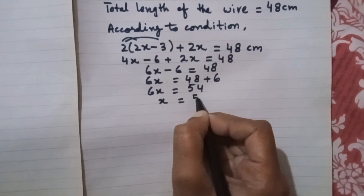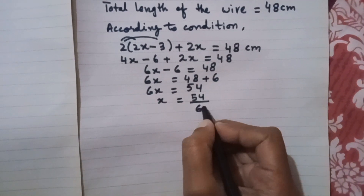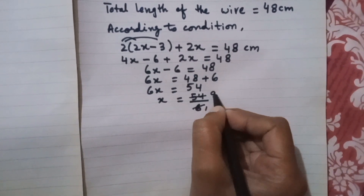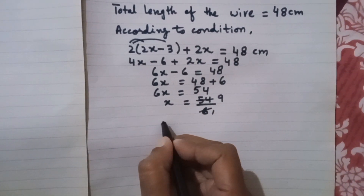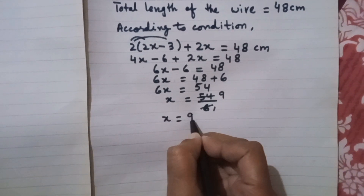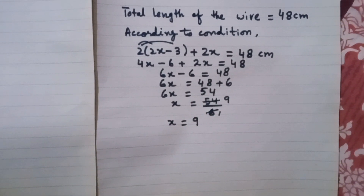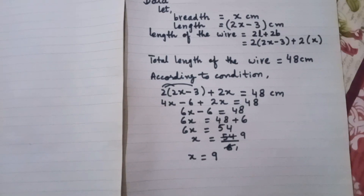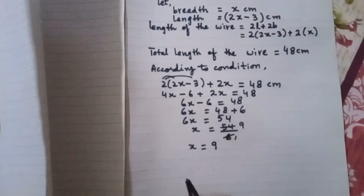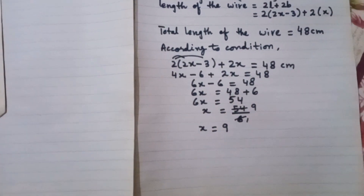From 6x equals 54, we get x equals 9. So the breadth of the rectangle is 9 centimeters. Now we have found the breadth; next we need to find the length.